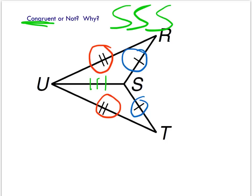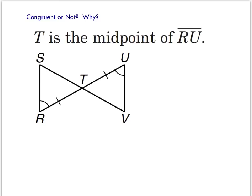Let's try another. Are these two triangles congruent? From the drawing, angle U and angle R are congruent. We know that T is the midpoint of RU, so the two segments from T to each endpoint are congruent in length — giving us a pair of sides. We have intersecting lines, which produce vertical angles, and vertical angles are always congruent. So we have angle, side, angle — and therefore we can prove these two triangles are congruent by ASA.